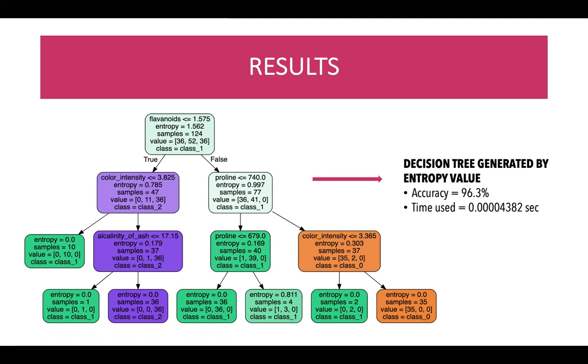After we have established the tree, we use it to predict the wine classes of the testing data. This particular decision tree was 96.3% accurate at predicting the classes of the testing data, and the time it used was 0.0004382 seconds.